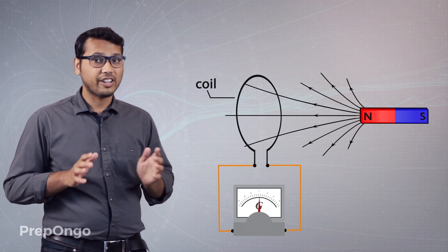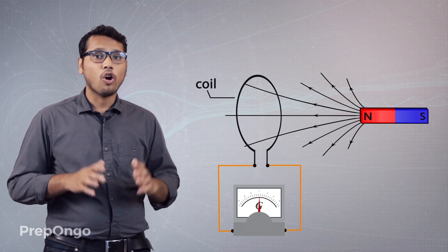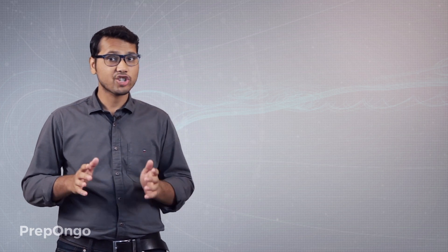This case is quite similar to Oersted's experiment. In Oersted's experiment the magnetic field direction depends on the direction of electric current, and in this case the direction of induced current depends on the direction of movement of the magnet.